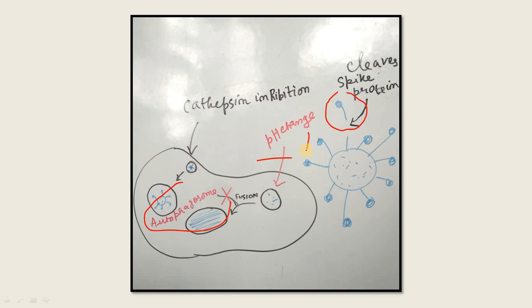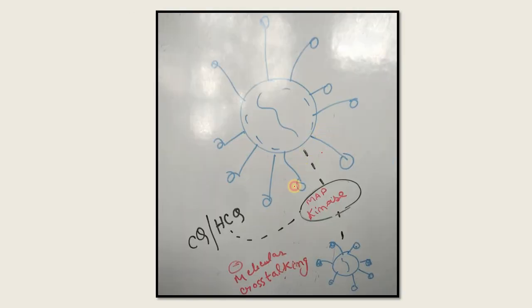Furthermore, chloroquine or hydroxychloroquine, through inhibition of MAP kinase, interferes with SARS-CoV-2 cross-talking. The cross-talking is inhibited or interfered with by these drugs.